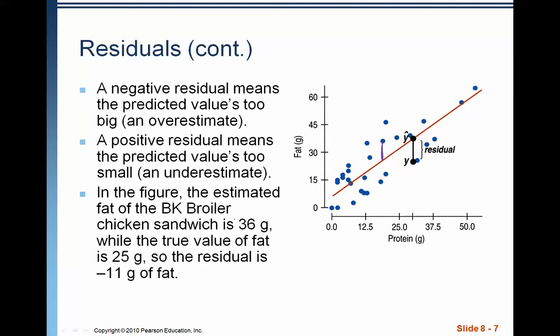The estimated fat for a BK broiler chicken sandwich is 36 grams. That's this one right here. And then the true value is only 25, so the residual is a negative 11 grams. So residuals are the difference.